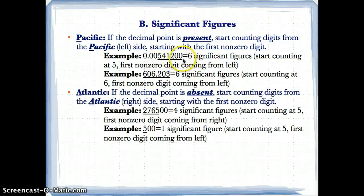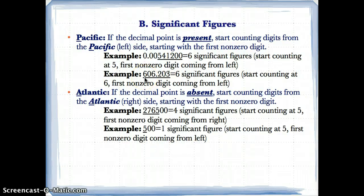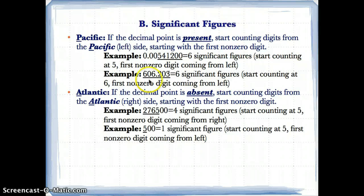Note that we counted the two trailing zeros because once you start counting sig figs from left to right, you can't stop until you reach the end. Example two: 606.203 — the decimal point is present between the six and the two, so we count from the left starting at the first non-zero digit: 6, 0, 6, 2, 0, 3 — six significant figures.